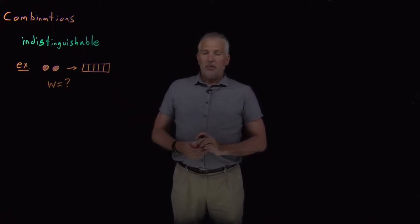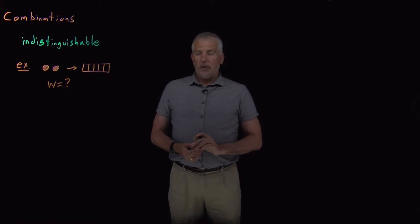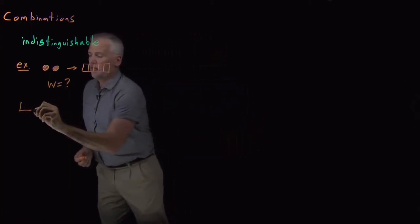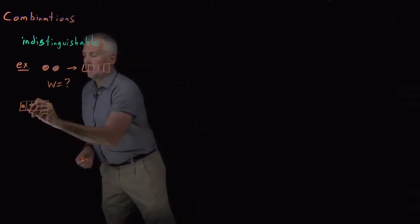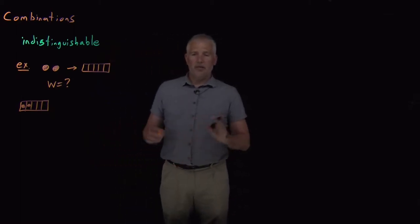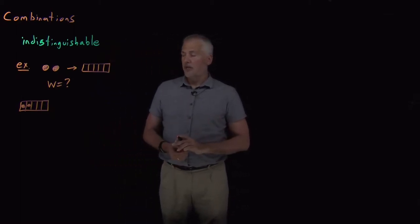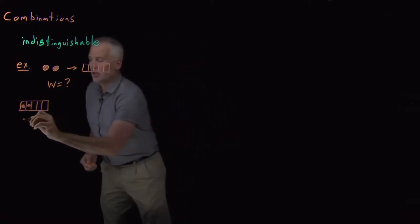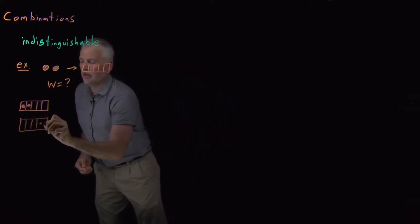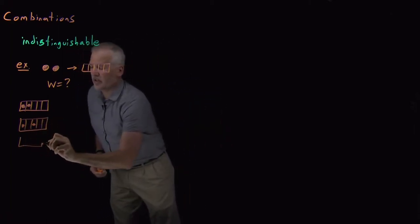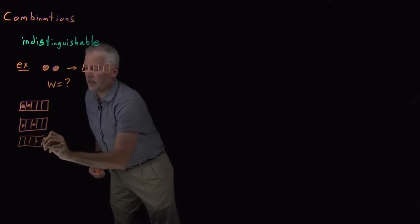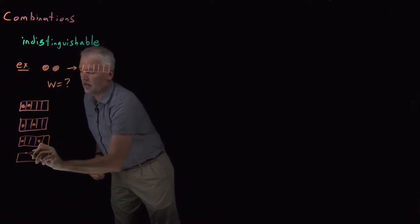This problem is simple enough that we can write down all the possibilities. So I've got five boxes. I can fill the first and the second box with two circles, and that's one option. Or perhaps after putting the first one in the first box, I could put the next one in the third box, or in the fourth box, or in the fifth box — so that's certainly four different options.